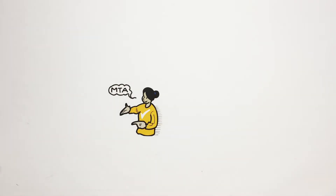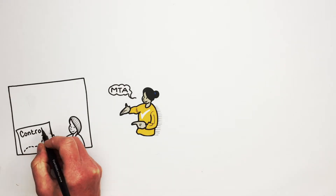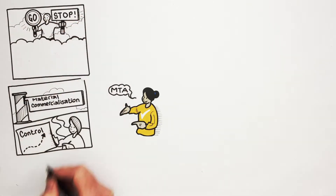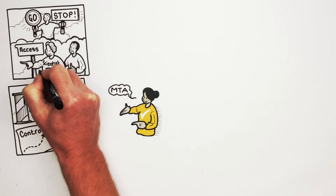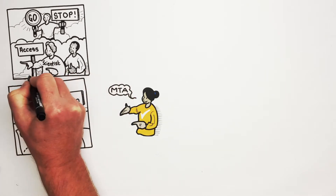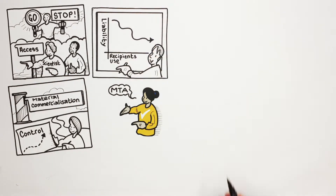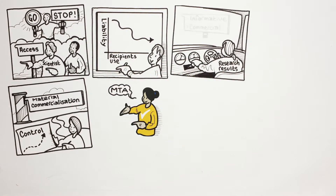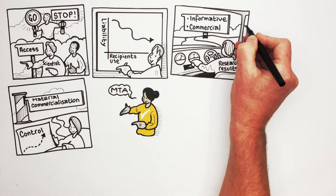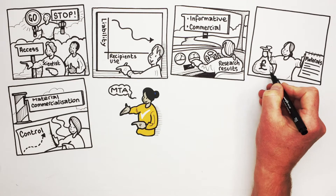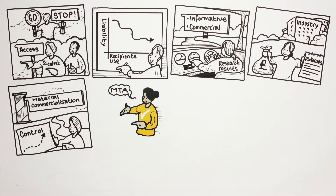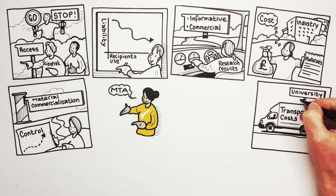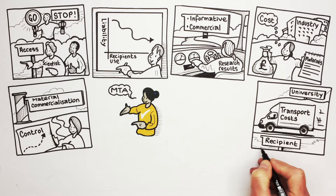An MTA can include control over the distribution of a material, including putting restrictions in place for material commercialisation. Restrictions to the only named recipient scientists in specific laboratories, or people under supervision of the named scientist, can access the material. Provisions to reduce the liability of a recipient's use of the material. Control over the research results using the material, for both informative purposes and commercial exploitation. Payment of the material — for example, the university can charge other parties such as industry for the cost of the material — and transport costs, where if the material is provided by the university free of charge, the recipient must pay for the transport costs.